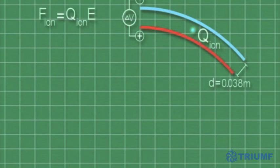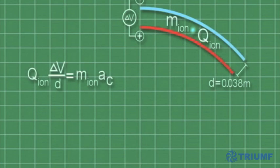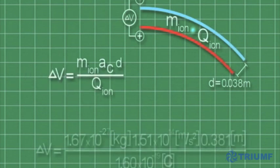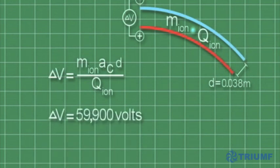Equating the electrostatic force with the centripetal force, we can calculate the potential difference across the plates. Rearranging the formulas and substituting in the known values of the ions' mass, centripetal acceleration, and the ions' charge, we determine the potential difference. Let's compare our calculation with the actual value used by the bender in Triumph's injection line.